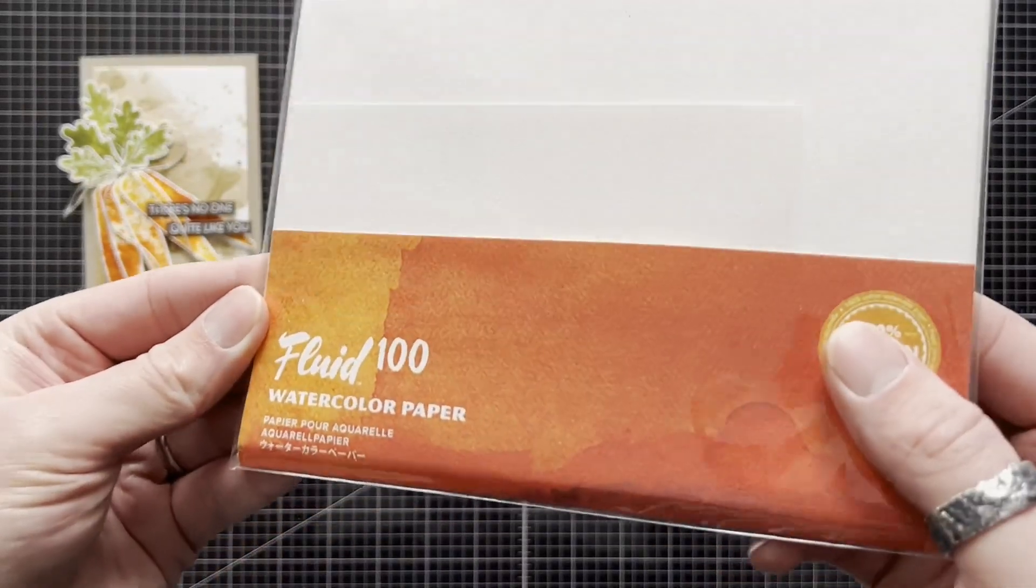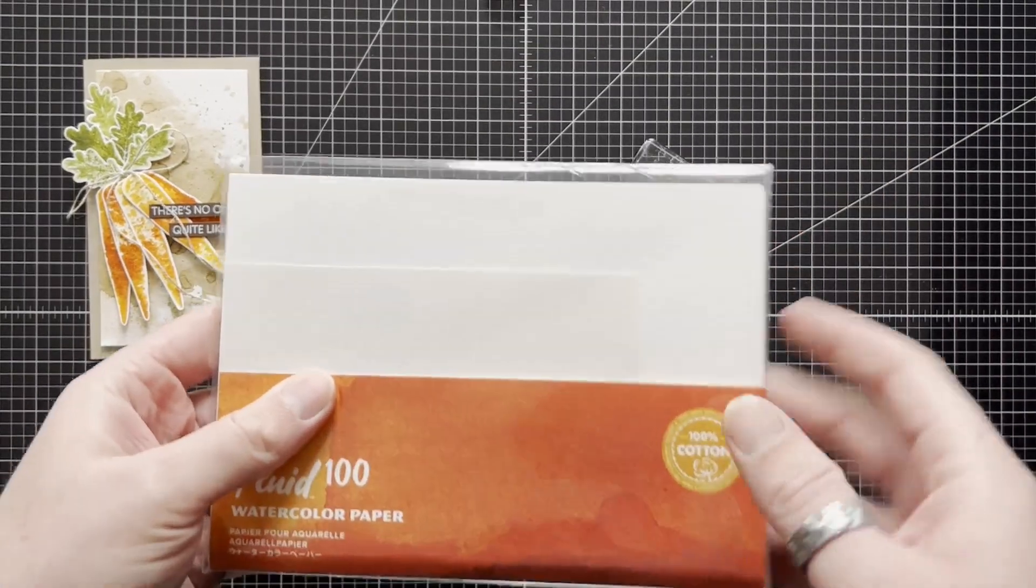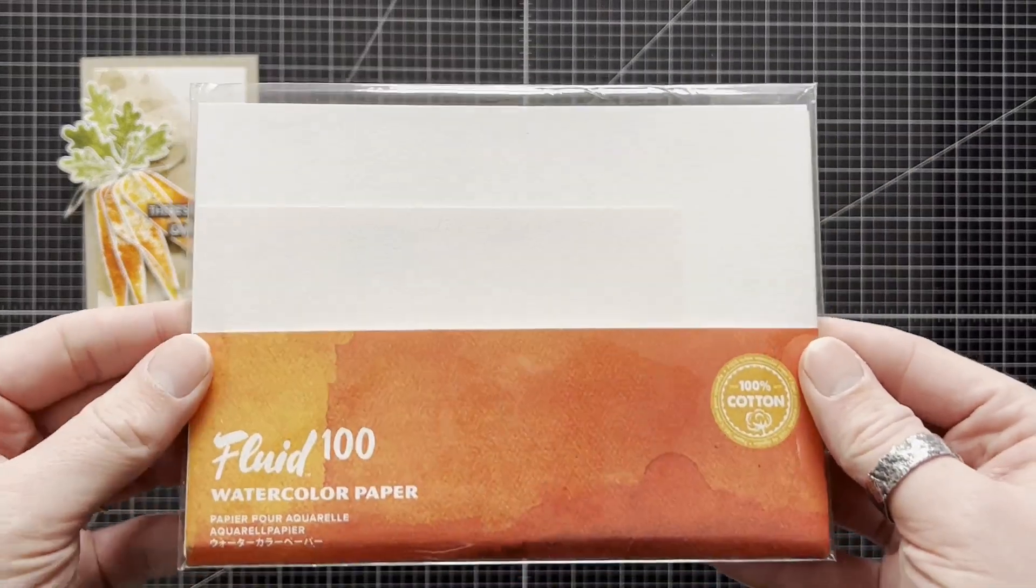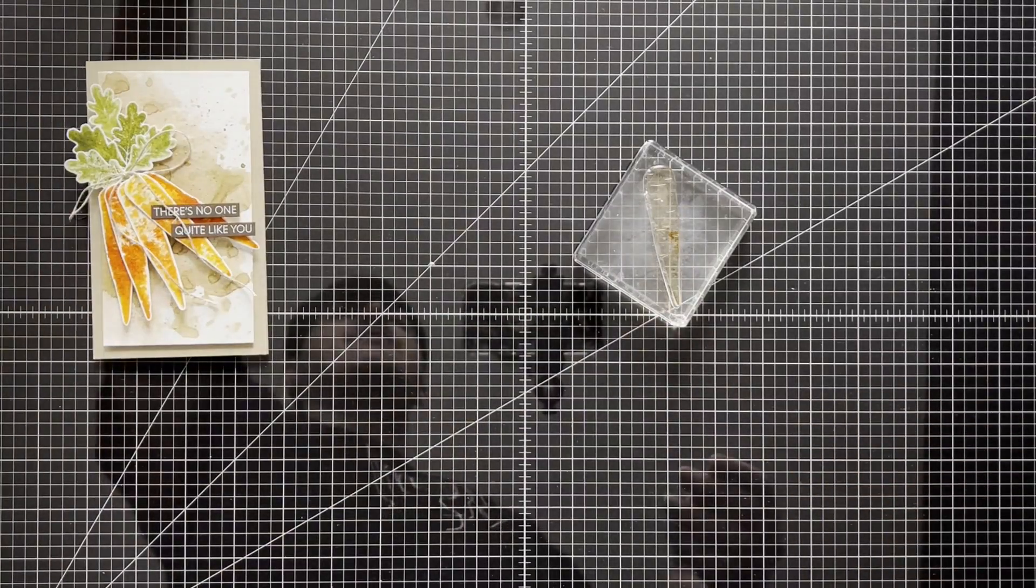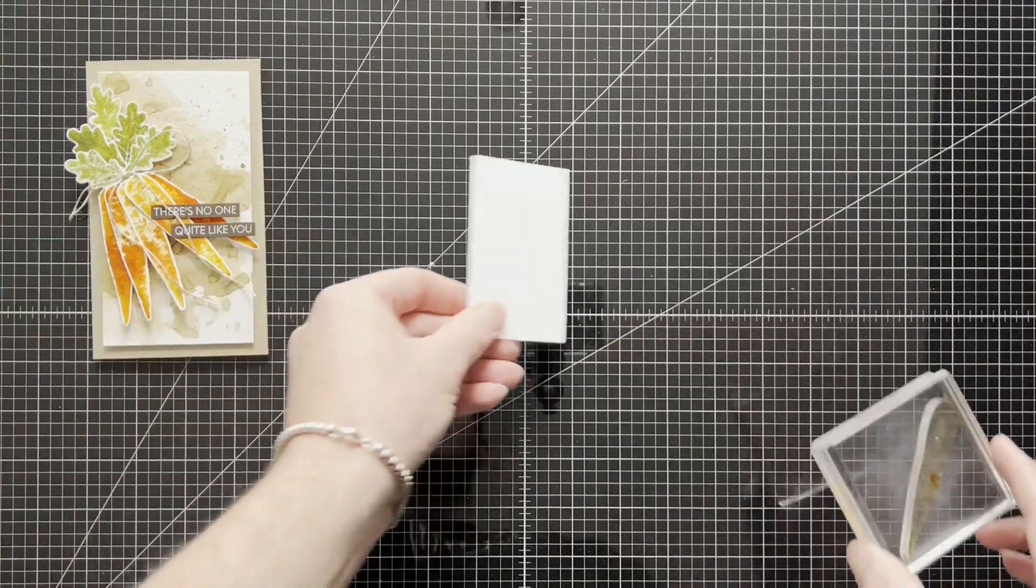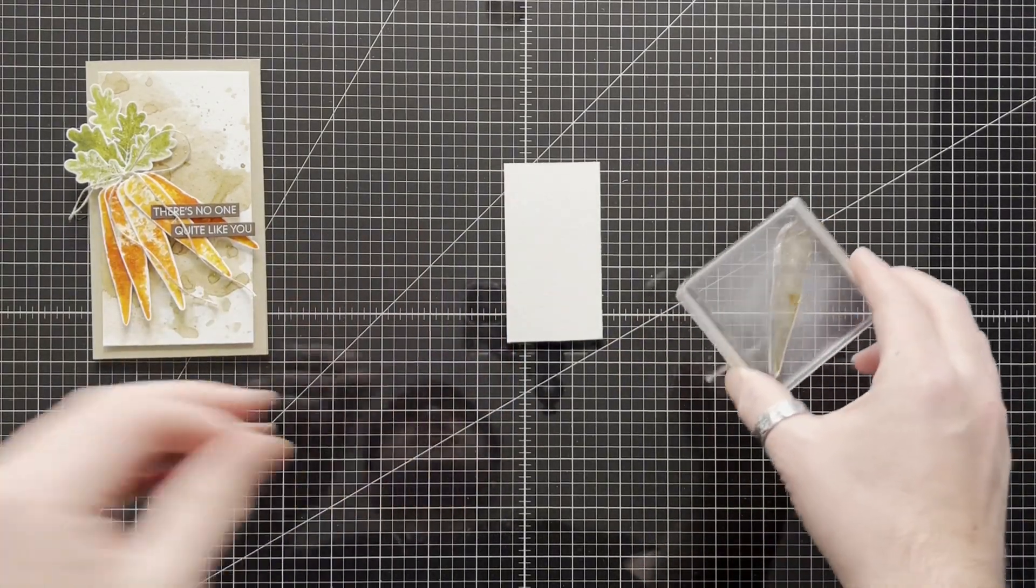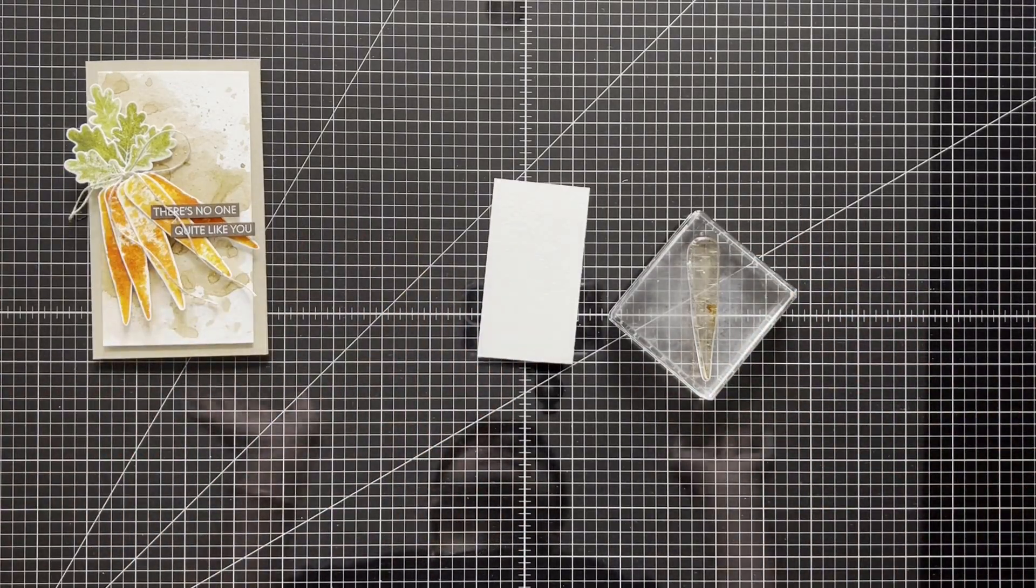You're going to need some Fluid 100 watercolor paper, which again, all the products in this video are sold via my Stampin' Up store. So make sure you check them out and make sure you include the free gift code so you get an extra goodie from me. I know what I mean, doesn't make sense in my head.